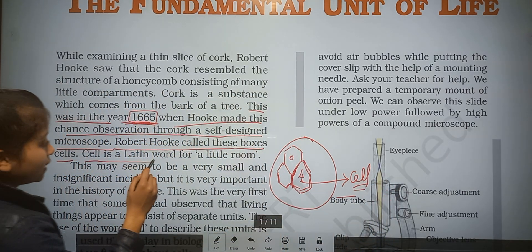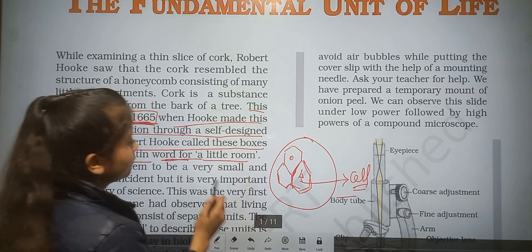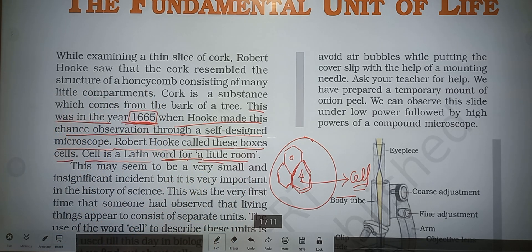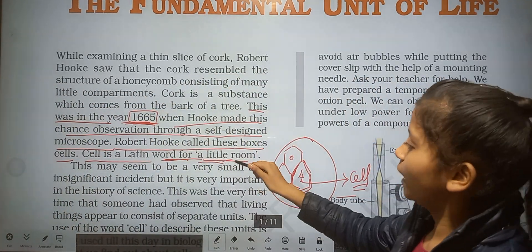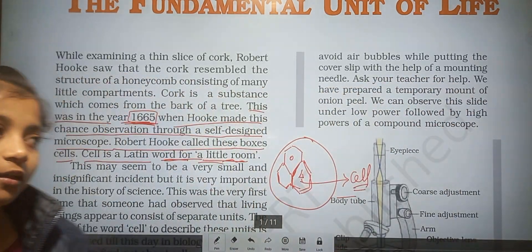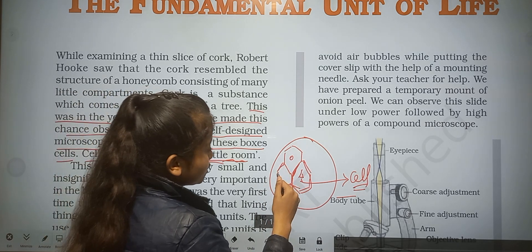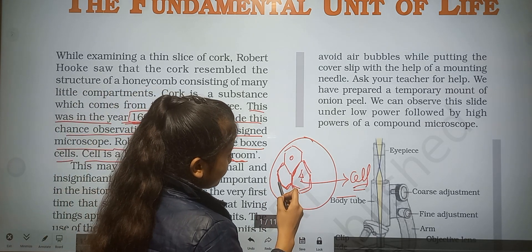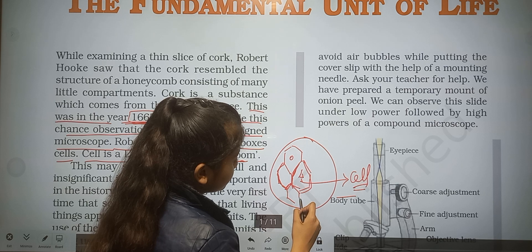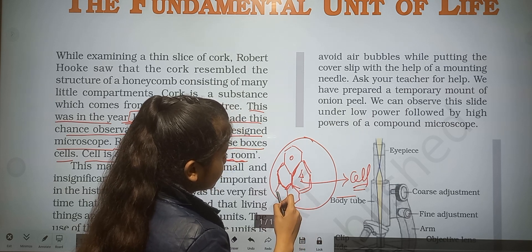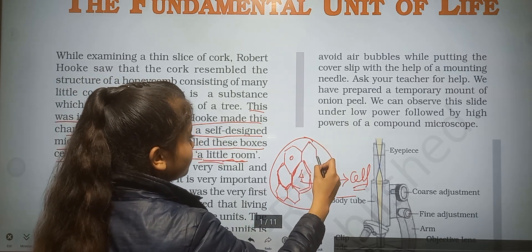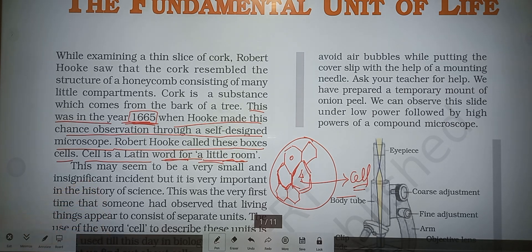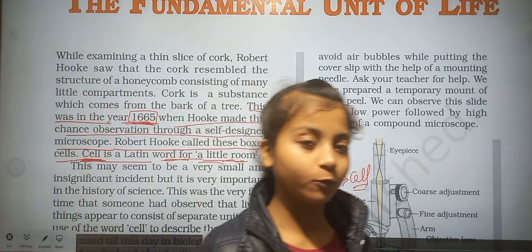Cell is a Latin word meaning 'a little room.' When Robert Hooke examined the cork, he saw small little compartments like rooms under the microscope, so he gave the name 'cell' because the Latin word for cell means a little room.